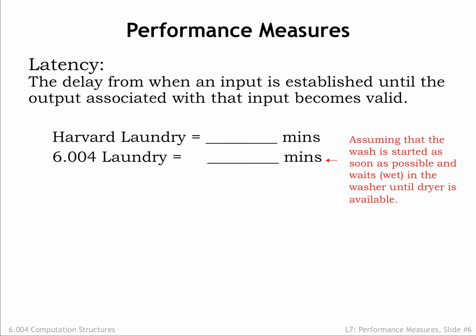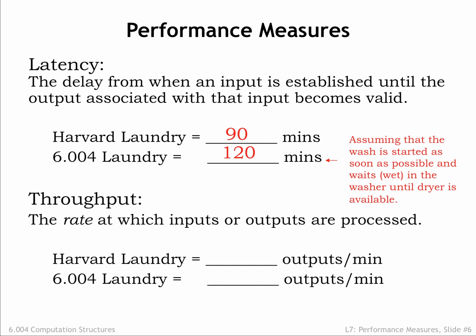We see that there are two interesting performance metrics. The first is the latency of the system — the time it takes the system to process a particular input. In the Harvard laundry system, it takes 90 minutes to wash and dry a load. In the 6.004 laundry, it takes 120 minutes to wash and dry a load, assuming that it's not the first load. The second performance measure is throughput, the rate at which the system produces outputs. In the Harvard laundry system, the throughput is one load of laundry every 90 minutes. In the 6.004 laundry, the throughput is one load of laundry every 60 minutes. The Harvard laundry has lower latency; the 6.004 laundry has better throughput.